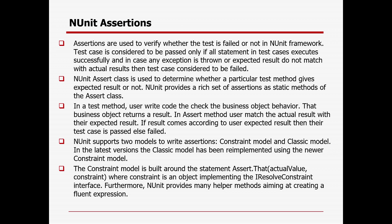In a test method, the user writes code to check the business object behavior — that business object returns a result. In the assert method, the user matches the actual result with their expected result. If the result comes according to the user's expectation, the test case will be passed; else it will be treated as fail. NUnit supports two models to write assertions: the constraint model and the classic model. In the latest version of NUnit, the classic model has been re-implemented using the newer constraint model.